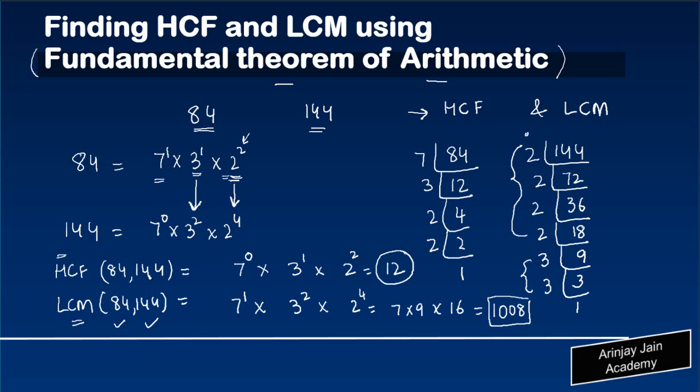Again, just to reiterate, if you have to find out the highest common factor of two numbers, what we do is once we have put in the composite numbers as a product of their primes, we compare the respective powers of each of these prime numbers. We write each of the prime numbers 7, 3, 2, then pick up the least power between the two numbers, so 7 to the 0, 3 to the 1, 2 squared, whatever is the product that's the highest common factor.